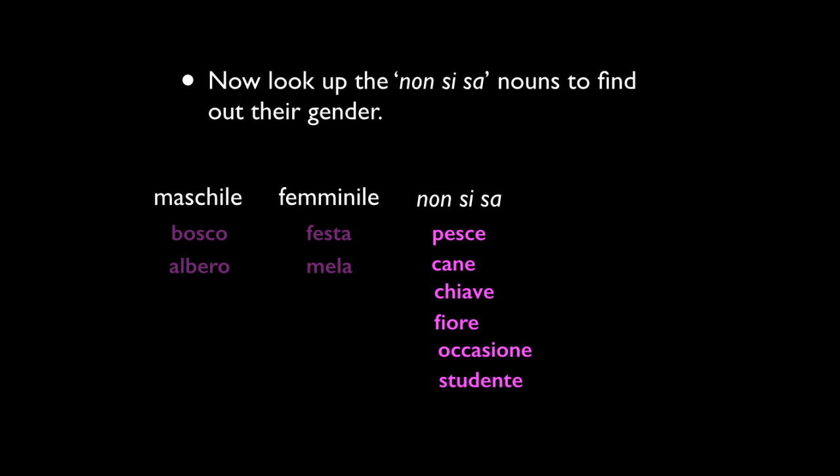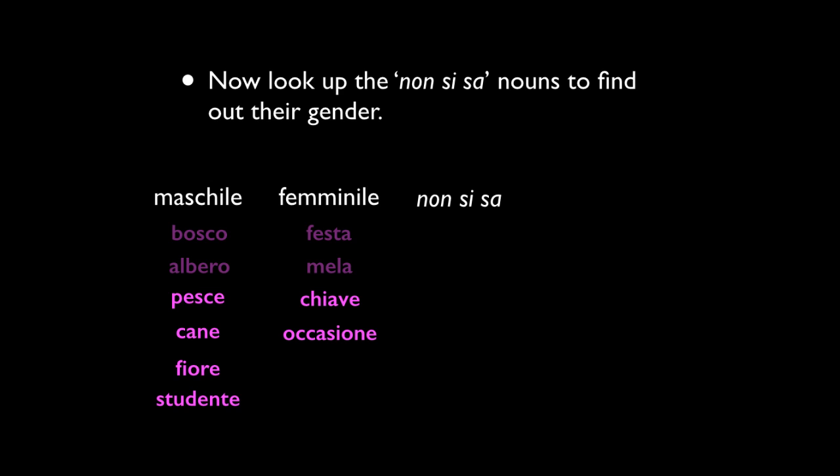And hopefully you have the following answers. There are some ways to remember some of these. For instance, words like fiore — words that end in -o-r-e — are generally masculine. And over on the feminine side, the -ione at the end of occasione is a signpost that something will be feminine. Ione is usually feminine — condizione, any -zione words usually. At any rate, I hope you found that useful, this beginning exercise on gender in Italian.